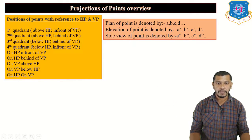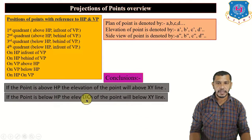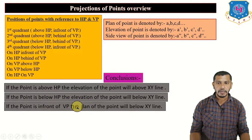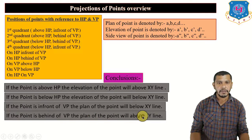The conclusion of projection of points: if the point is above HP, we get the elevation above the XY reference line. For example, if the point is 20 mm above HP, the elevation will be 20 mm above XY. If the point is below HP, the elevation will be below XY — for example, 15 mm below HP gives elevation 15 mm below XY. If the point is in front of VP, the plan will be below XY — for example, 10 mm in front of VP gives plan 10 mm below XY. If the point is behind VP, the plan will be above XY — for example, 25 mm behind VP gives plan 25 mm above XY.